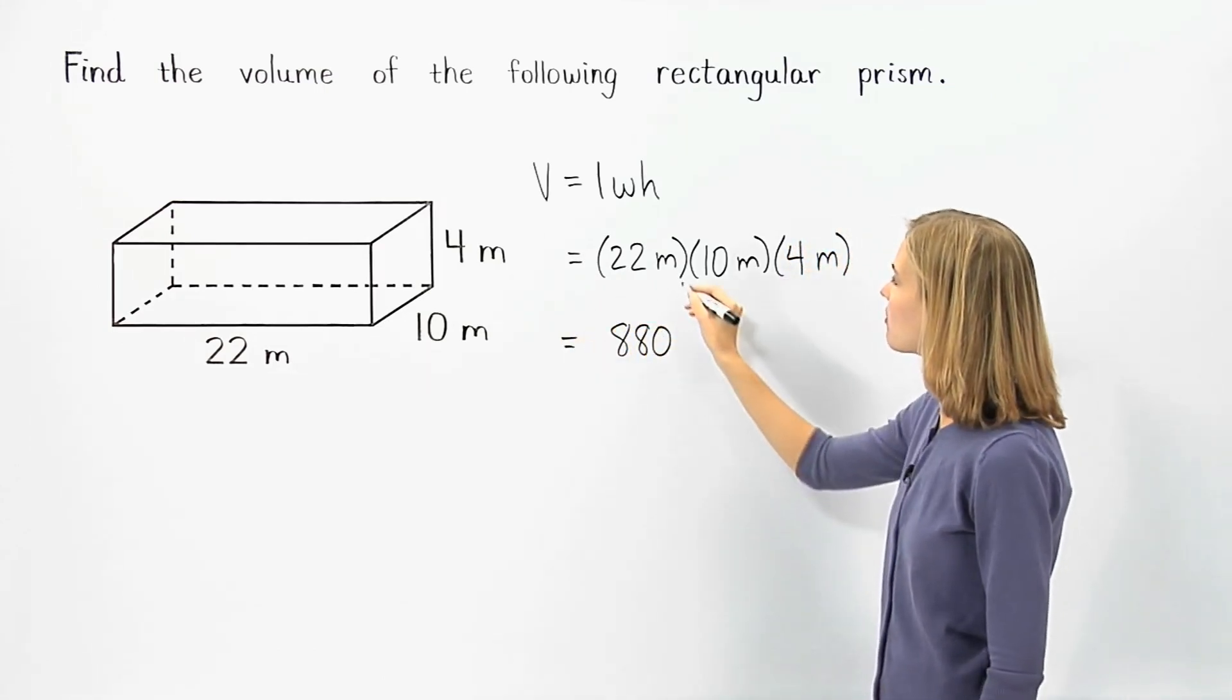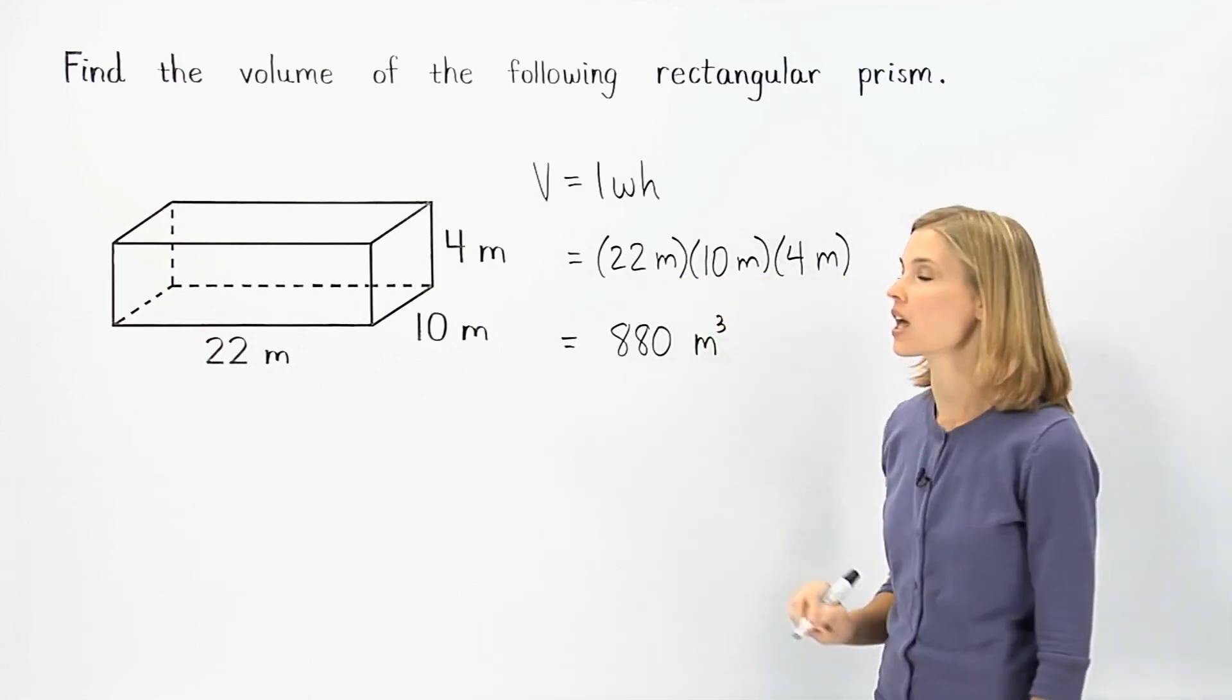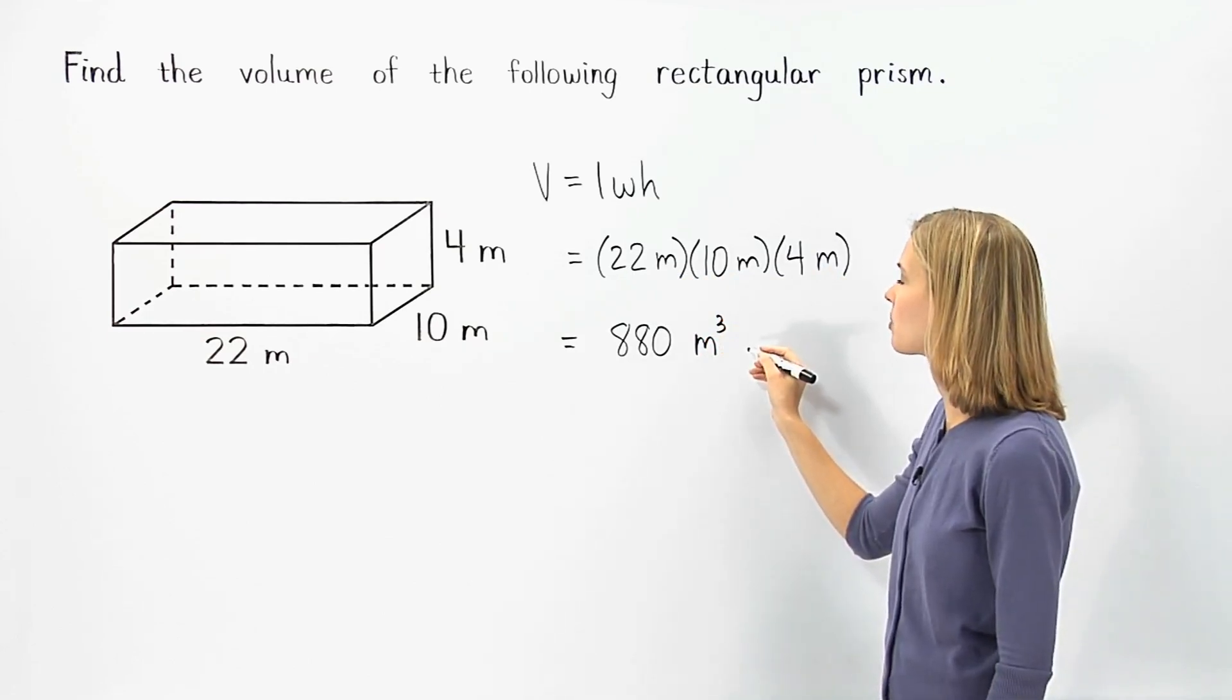Notice that we have meters times meters times meters, or meters cubed. So the volume of the given rectangular prism is 880 cubic meters.